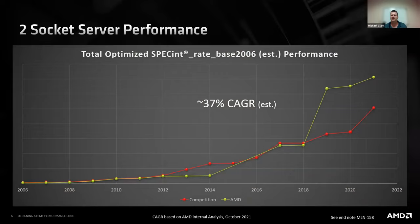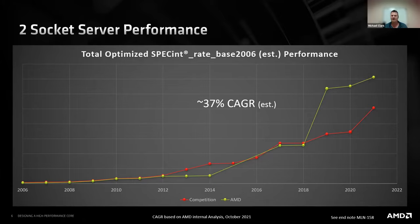Looking historically at the challenges for a core architect: this is SPECint rate, total throughput — all public data. This looks at a two-socket server because that's sort of the meat of the market over time, taking the best score from both our competition and us. SPECint rate has the property of having this nice long history to evaluate and look at trends in industry.